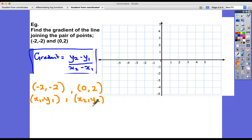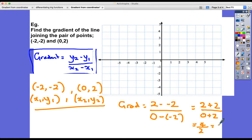And so what we've got then is the gradient is y2 minus y1, but y2 is 2. So gradient is going to be y2, 2 minus y1, which is minus 2, over 0, which is my x2, and my x1, my first x-coordinate, minus 2, subtract minus 2. So what have I got then? 2 plus 2, let's subtract a negative number, and 0 plus 2, which is 4 divided by 2, which is a gradient of 2.